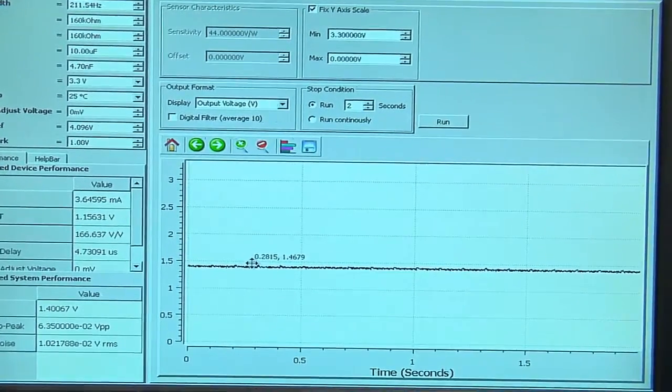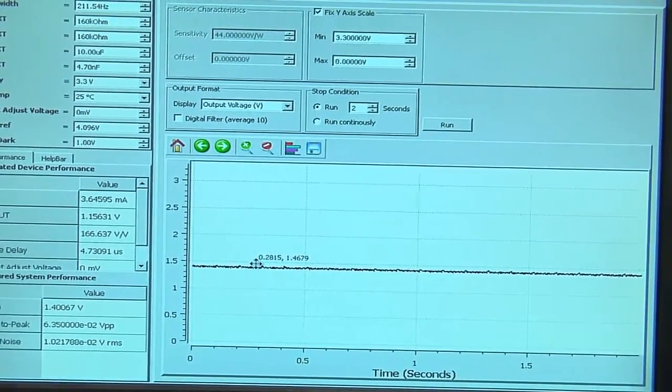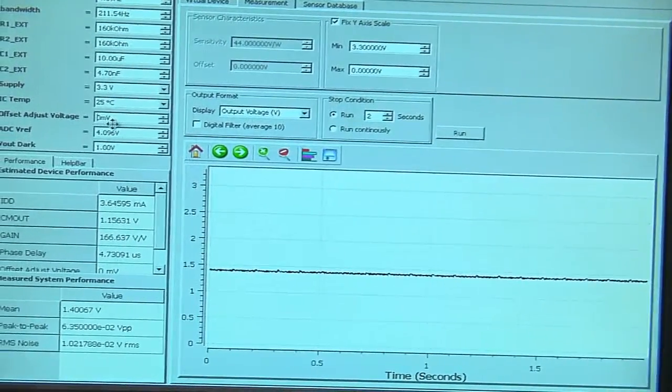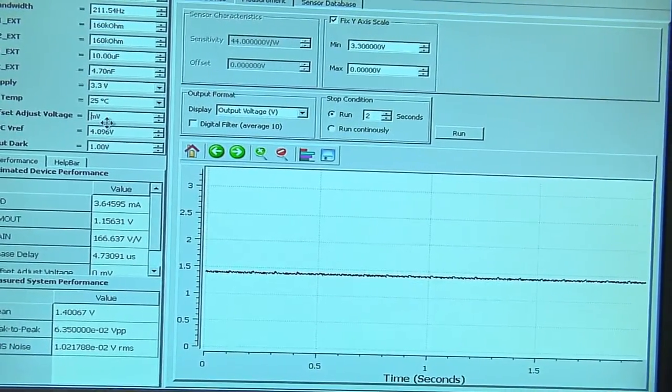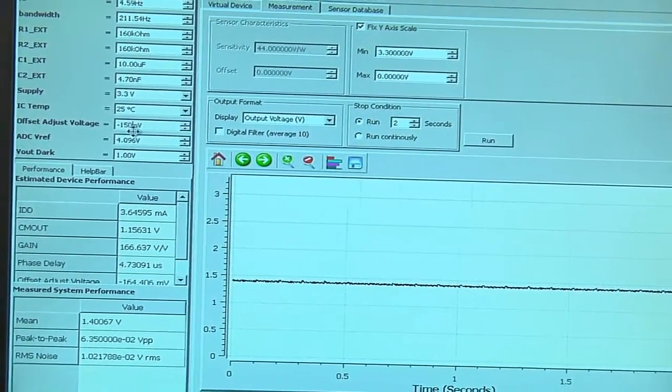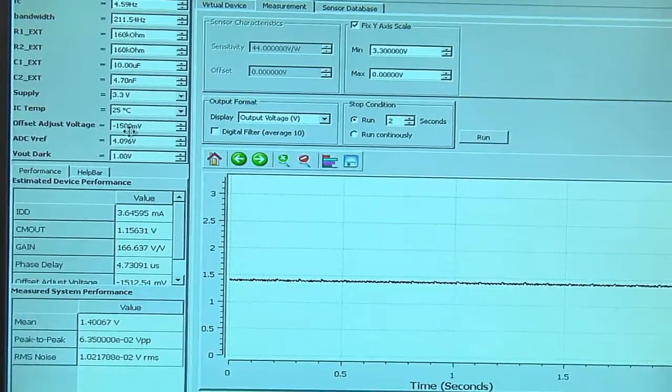Now, the LMP9150 has the ability to adjust the output voltage, and we can do this via software by going to the customer input, and typing in the voltage that we want to shift by. Let's go for 1.5 volts here.